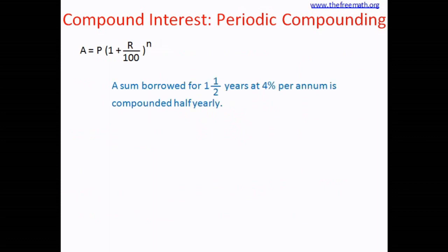Let's practice identifying r and n. Problem 1: a sum borrowed for one and a half years at 4 percent per annum, compounded half-yearly. Since it is compounded every six months and 4 percent is the yearly rate, we divide by 2: rate r = 2 percent per six months. The total period is one and a half years, so there are three compounding periods of six months each, meaning n = 3.